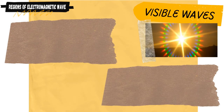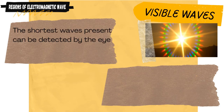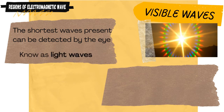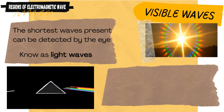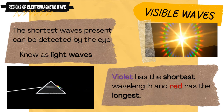Visible waves become present at around 700°C, where the shortest waves can be detected by the eye — these are what we know as light waves. Visible light makes up only a small portion of the entire electromagnetic spectrum. When white light passes through a prism, it is separated into its constituent colors: red, orange, yellow, green, blue, indigo, and violet. Violet has the shortest wavelength and red has the longest. There are no sharp boundaries separating the various colors; instead, there is a continuous blending from one color to the next.